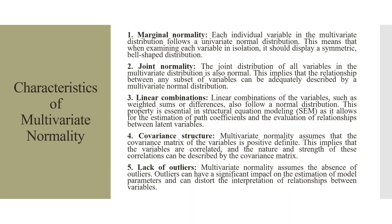Joint Normality: The joint distribution of all the variables in the multivariate distribution is also normal. This implies that the relationship between any subset of the variables can be adequately described as a multivariate normal distribution. Linear combinations of the variables, such as weighted sums or differences, also follow a normal distribution. This property is essential in structural equation modeling as it allows for the estimation of path coefficients and the evaluation of relationships between the latent variables.